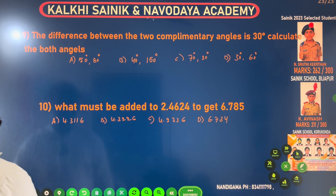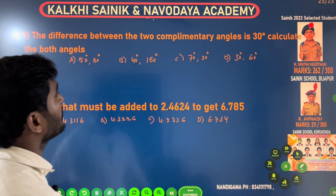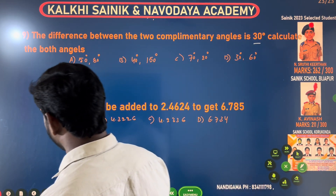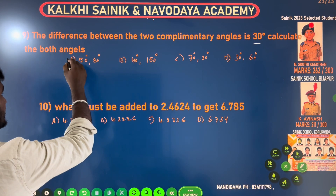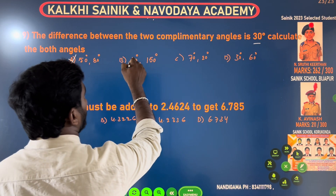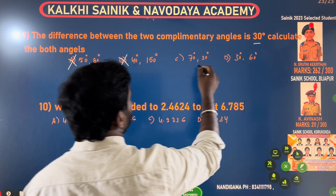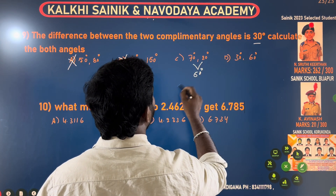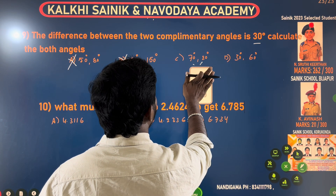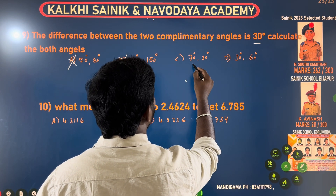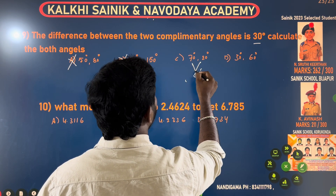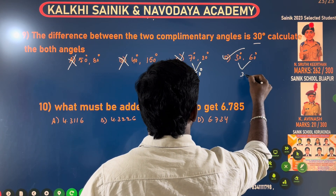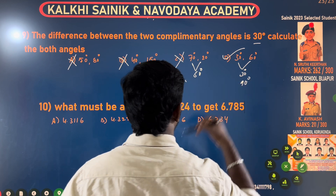The difference between the two complementary angles is 30 degrees. Complementary meaning 90 — so 50 plus 40 equals 90, and 70 plus 20 equals 70. The difference between the two complementary angles is 30 degrees. Option B is 30 degrees and 90 degrees.